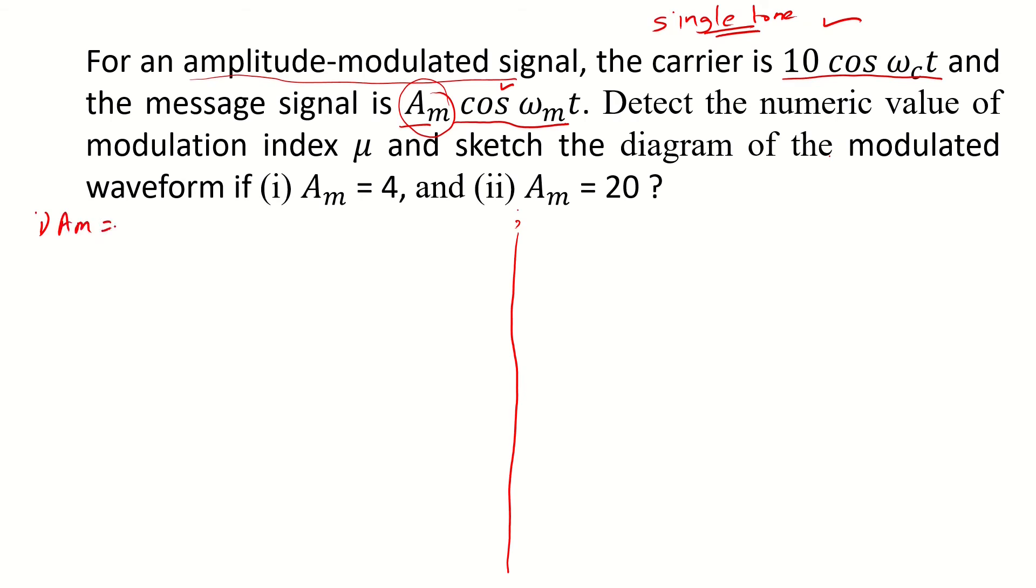Let us consider the first case when Am is equal to 4. This is an example of single tone, so modulation index μ is Am by Ac, and Am is equal to 4 while the Ac from carrier is 10. So our modulation index is 0.4.